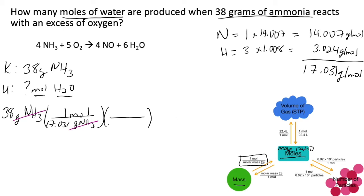The mole ratio requires us to go to the chemical equation. We want to cancel out moles of ammonia, so we put that at the bottom, and we want to keep moles of water at the top — because that is what we are asked to find. Going to the chemical equation, we use the coefficients to determine our mole ratio. The coefficient for ammonia is 4 and the coefficient for water is 6.